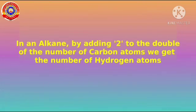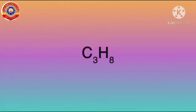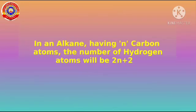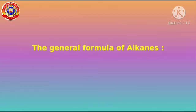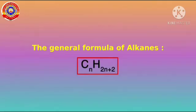Could you tell me how many hydrogen atoms will be required for a hydrocarbon with three carbon atoms? It is eight. Here also we get the number of hydrogen by adding two to double the number of carbon atoms. Hence, in an alkane having n carbon atoms, the number of hydrogen atoms will be 2n + 2. The general formula for alkanes can be represented as CₙH₂ₙ₊₂.